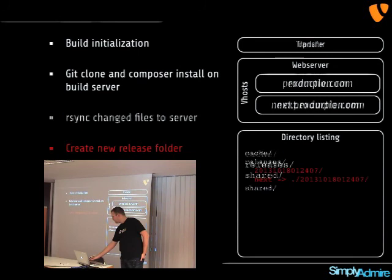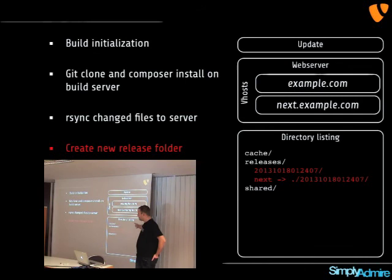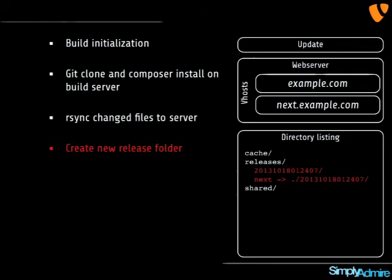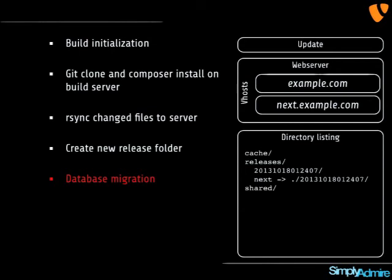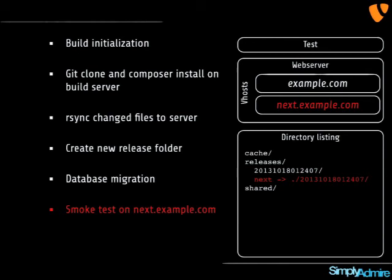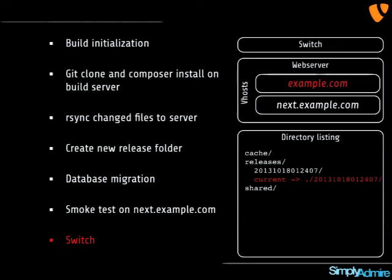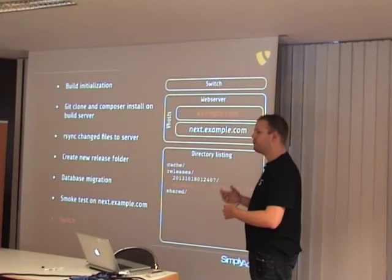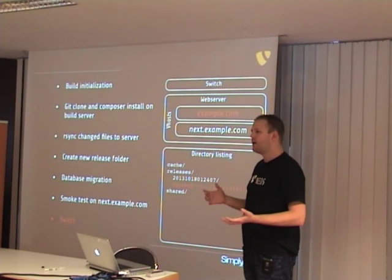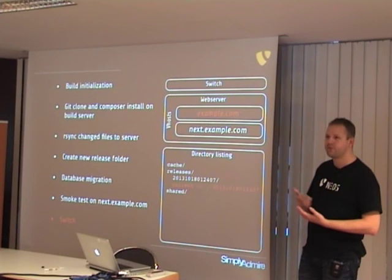In the package stage, I make a local clone of my project on the build server, run Composer install, and prepare all the code to be ready. It's then rsynced to the cache folder. In the update stage, a new release folder is created in the releases path — marked with the date — and a symlink is created pointing to the next release to be deployed. Then I run a database migration. After that, I have a separate vhost — next.example.com — pointing to my next symlink. I do a curl request; if I get a status code 200, then I switch the symlink and from now on Surf says your new website is live.